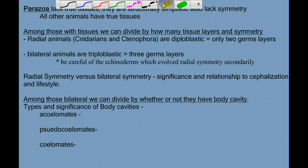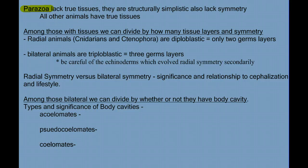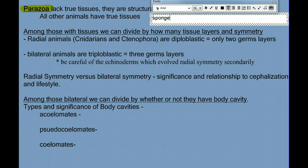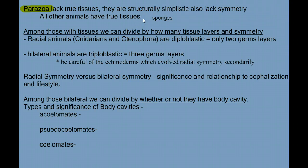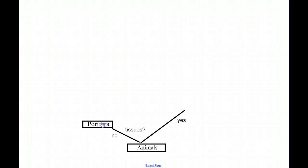The first question we need to ask is: does this animal have true tissue? Is there a distinct division of labor among the cells? If the answer is no, we have a group of animals called the Parazoa. The word parazoa — para means 'alongside of,' zoa means 'animals.' An example of the Parazoa are sponges. These are animals, but they're very simple and they lack true tissues. The example of the animal on this branch is the Porifera, or the sponges — porifera meaning 'filled with holes or pores.'